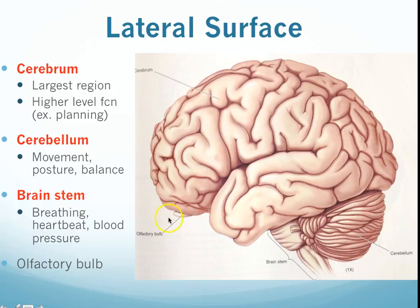Another interesting one to note is the olfactory bulb. This isn't really a brain region per se — this is actually a direct outgrowth of the brain. You might see the word olfactory and be able to figure out that this has to do with smell. The olfactory bulb is a very important sensory area that is a direct outgrowth of the brain, and that's kind of what makes it really neat.